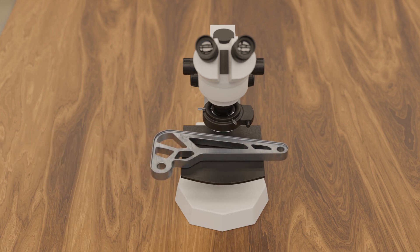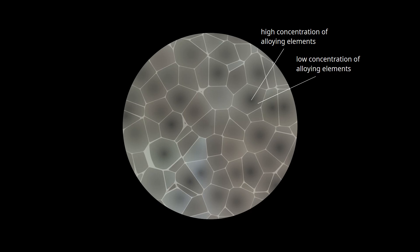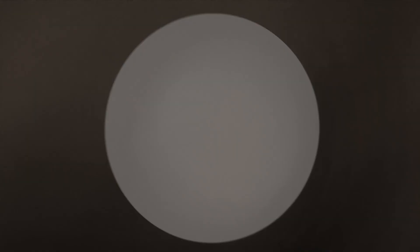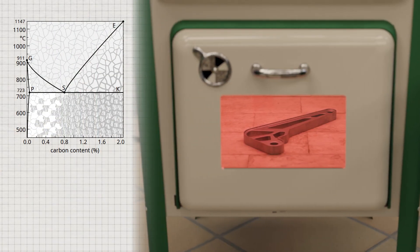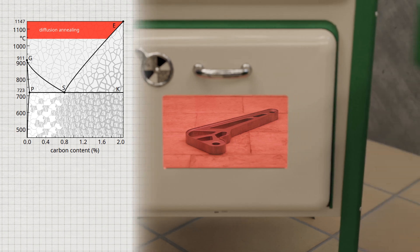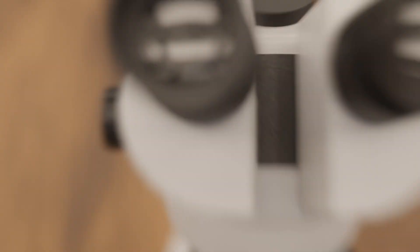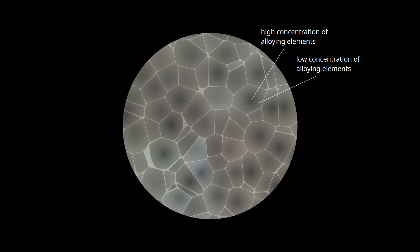During solidification of steels with high alloy concentrations, an uneven distribution of the alloying elements in the microstructure can occur. Such differences in concentration within individual crystals are also known as crystal segregation or microsegregation. The different alloy concentrations are also associated with different properties within a grain. It may therefore be necessary to eliminate the concentration differences within a microstructure by a process known as diffusion annealing. In diffusion annealing, the steel is heated to relatively high temperatures between 1050 and 1300 degrees Celsius, ensuring that diffusion processes can take place at a sufficient rate for the atoms to cover long distances.